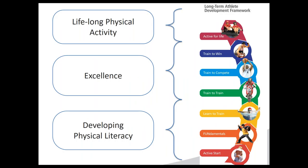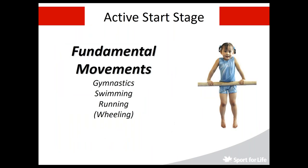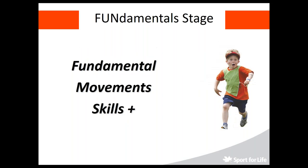The first three stages — active start, fundamentals, and learn to train — develop physical literacy. Train to train, train to compete, train to be excellent, and finally retire from competition to active for life. Active start focuses on fundamental movement skills: gymnastics, swimming, running, and wheeling for wheelchair sports — requiring lots of unstructured play. The fundamental stage is approximately six to nine years, where fundamental movement skills are developed with an emphasis on FUN. Learn to train develops fundamental sports skills — the more skills you develop before specializing, the better athlete you will be.